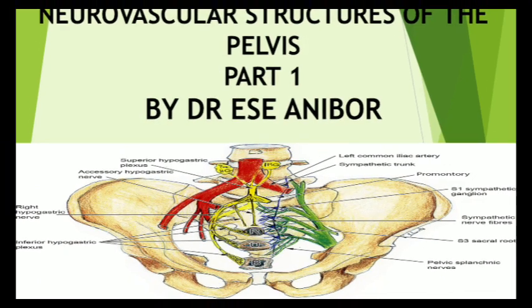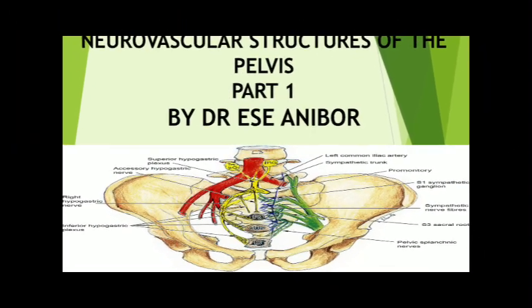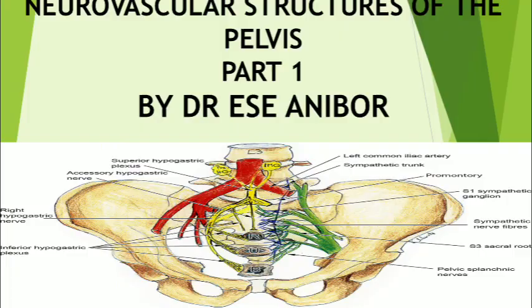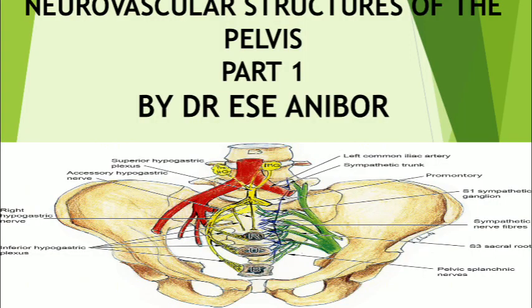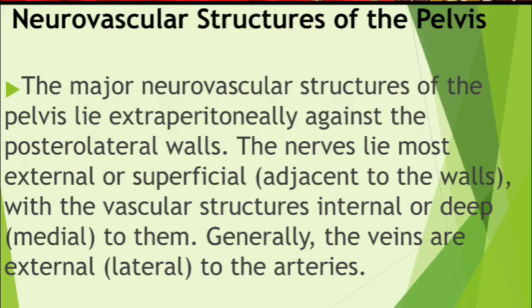Welcome to this YouTube channel. The topic for today is neurovascular structures of the pelvis, Part 1. This lecture looks at the nerves of the pelvic region. The major neurovascular structures of the pelvis lie extraperitoneally — that is, outside the peritoneum — against the posterolateral walls of the pelvis.